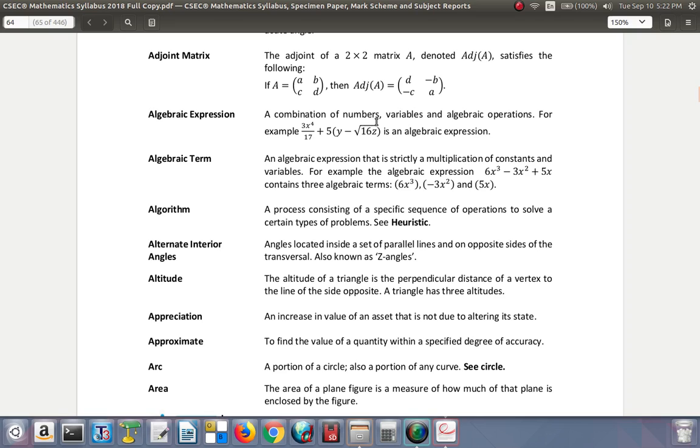Algebraic expression: a combination of numbers, variables, and operations. For example, an expression without an equal sign. Algebraic term: an algebraic expression that is strictly a multiplication of constants and variables. For example, 6x³ - 3x² + 5x contains three algebraic terms separated by plus and minus.